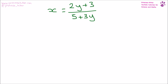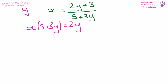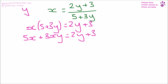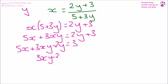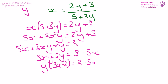Here I want you to make y the subject of the formula. So we have x(5 + 3y) = 2y + 3. Multiply out the brackets: 5x + 3xy = 2y + 3. Get everything with y over to one side: 5x + 3xy − 2y = 3. Everything that's not y over the other side: 3xy − 2y = 3 − 5x. Pop that into a bracket: y(3x − 2) = 3 − 5x. Then we can divide by (3x − 2): y = (3 − 5x) over (3x − 2).